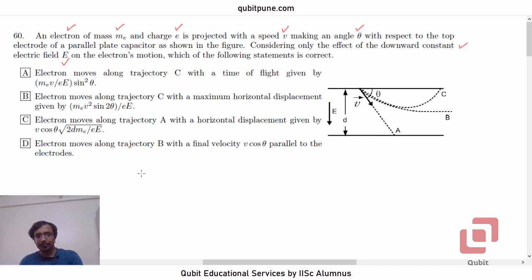Now, observe this. The component V cos theta of the electron velocity is going to be unaffected. Because that is not the direction in which electric field is acting. Which means V sin theta is going to get affected, the vertical component.